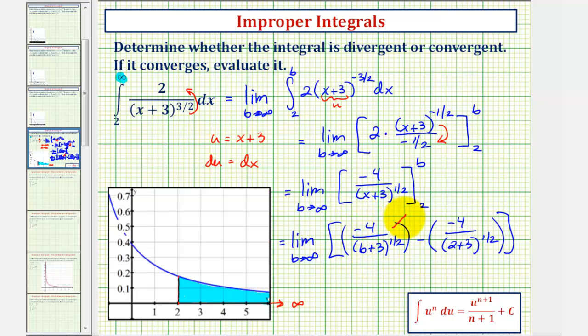So if this approaches zero and this fraction is not affected by b, our limit is going to be positive 4 divided by 5^(1/2) or the square root of 5.